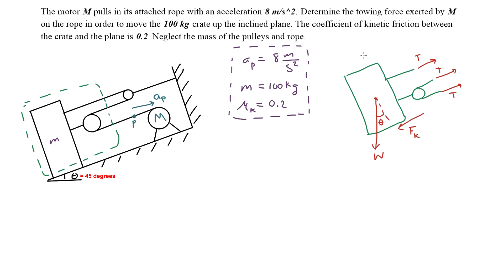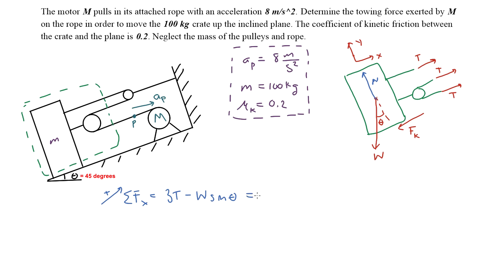The next thing is to define a coordinate system: positive x-axis up the incline and positive y-axis perpendicular to it. Since the object accelerates in the x-direction, and the normal force and weight cancel in the y-direction, we only need forces in the x-direction. Summing forces in x: 3T minus W sine theta equals mass times the acceleration of the crate.